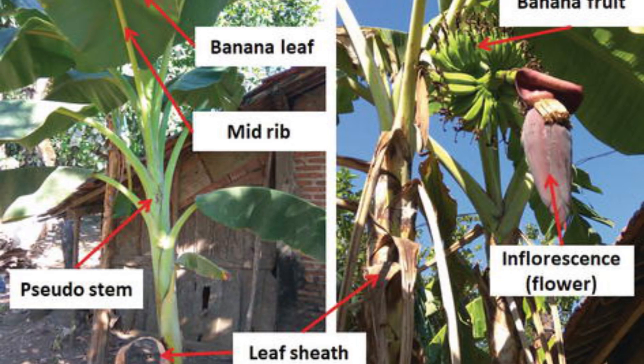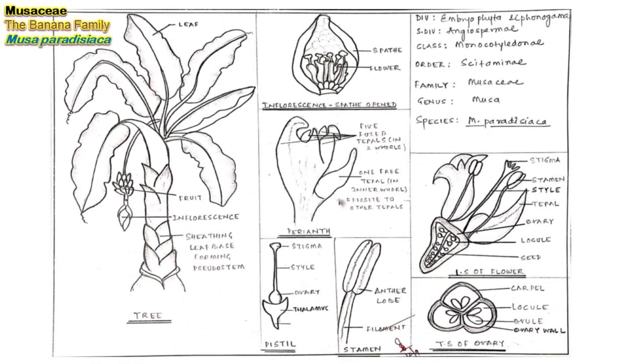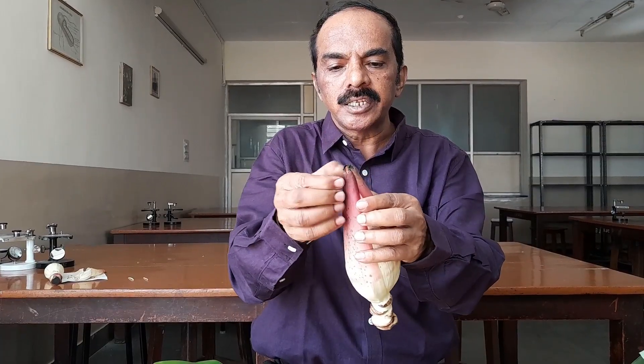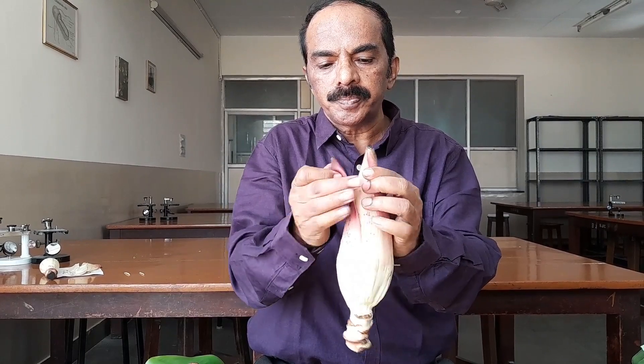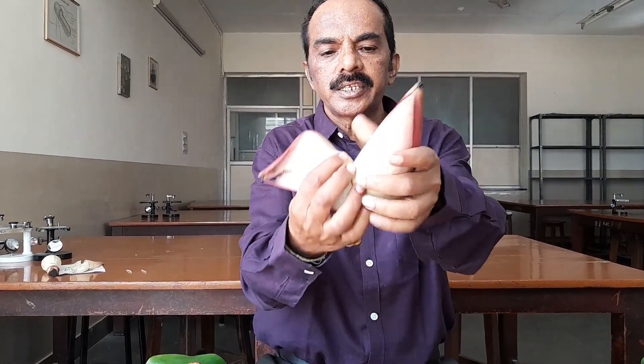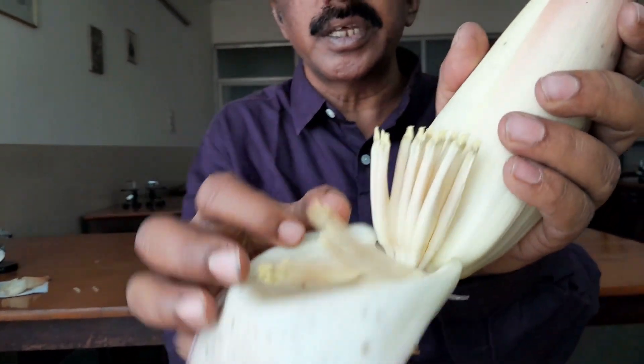So banana is a gigantic herb with long leaves having unicostate parallel venation. The inflorescence in the case of Musaceae or banana is a spadix, and there is a brightly colored spathe which is usually violet in color. This violet spathe encloses a cluster of flowers. Inside the spathe you can see the flowers arranged.